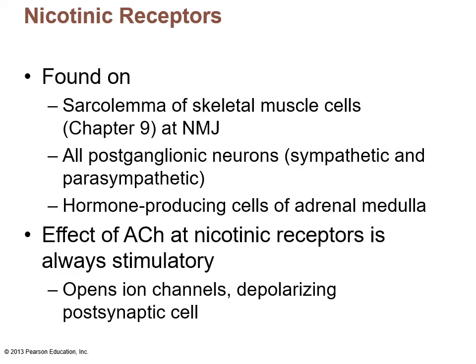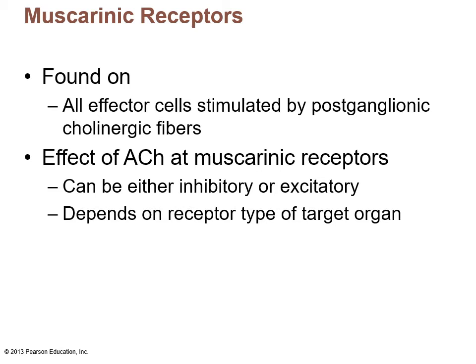Nicotinic receptors are found on the sarcolemma of skeletal muscle cells at the neuromuscular junction, on all postganglionic neurons — both sympathetic and parasympathetic — and on hormone-producing cells of the adrenal medulla. The effect of acetylcholine at nicotinic receptors is always stimulatory: it opens ion channels and depolarizes the postsynaptic cell. Muscarinic receptors are found on effector cells stimulated by postganglionic cholinergic fibers. The effect of acetylcholine at muscarinic receptors can be either inhibitory or excitatory, depending on the receptor type of the target organ.